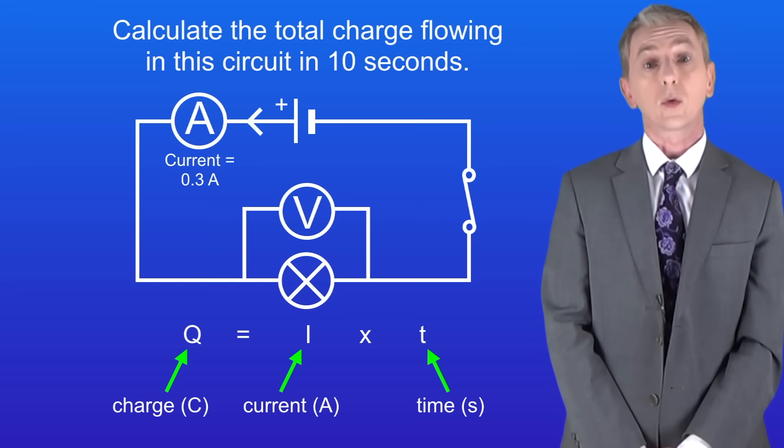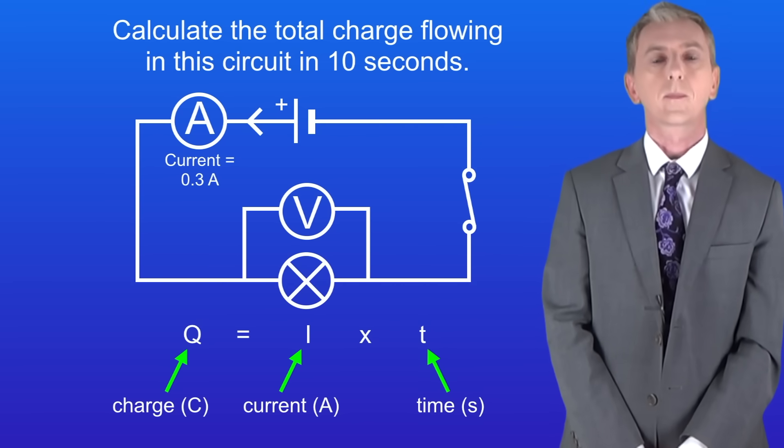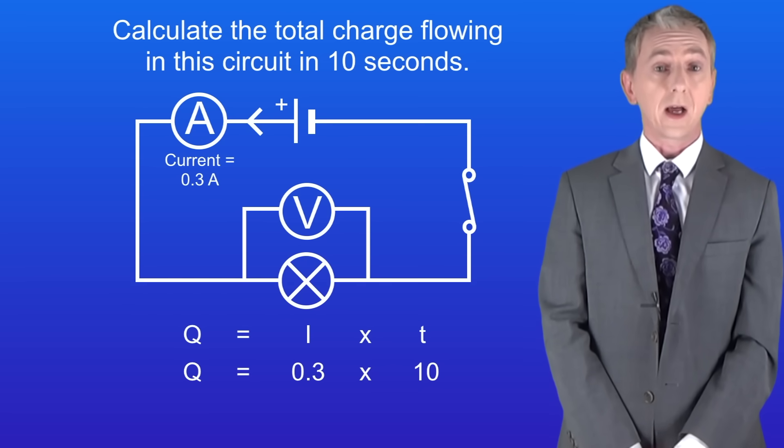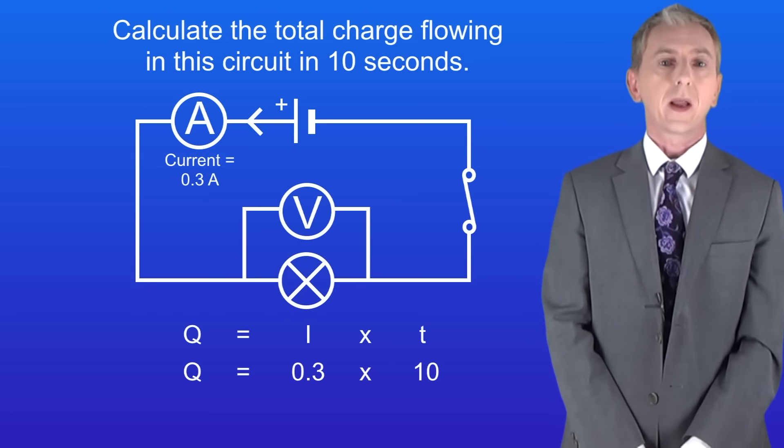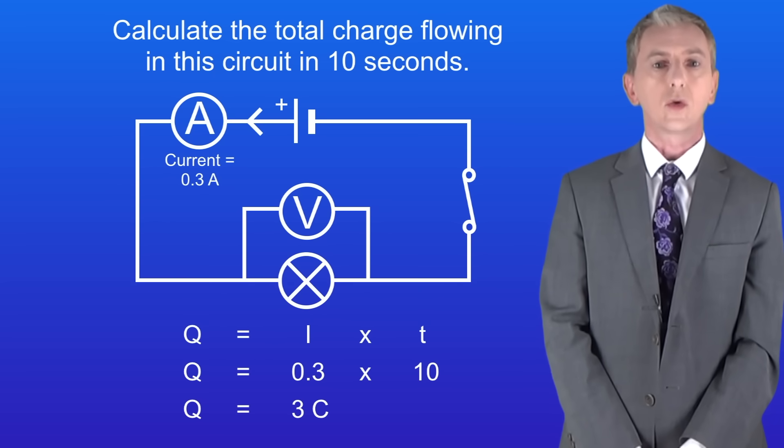The charge in coulombs equals the current in amperes multiplied by the time in seconds. So we've got a current of 0.3 amperes and a time of 10 seconds. Multiplying 0.3 by 10 gives a total charge of 3 coulombs.